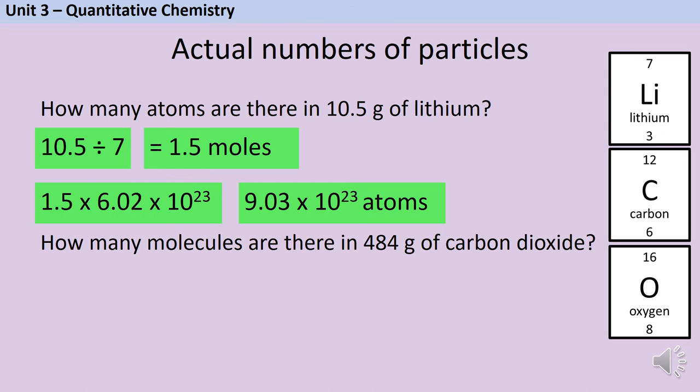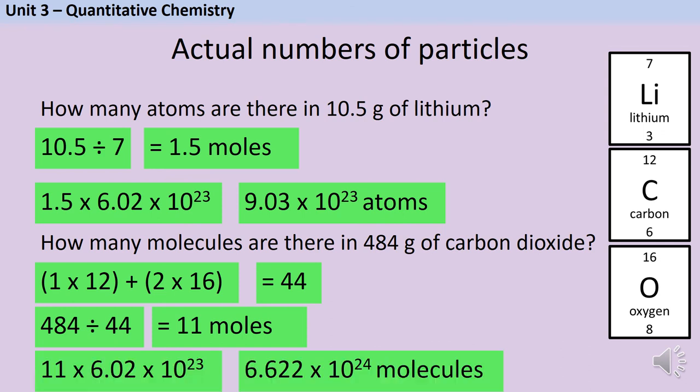For the second part of my question I'm going to go through the same process, but in order to work out the number of moles I need the relative formula mass first. So 1 lot of 12 because there's one carbon in carbon dioxide, and 2 lots of 16 because there are two oxygens, gives me a relative formula mass of 44. 484 divided by 44 gives me 11 moles, and then 11 multiplied by Avogadro's number gives me an answer of 6.622 times 10 to the 24 molecules.